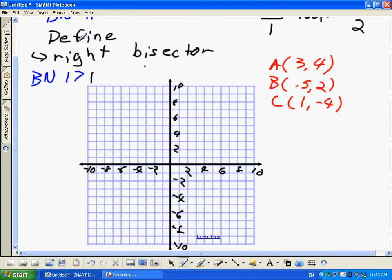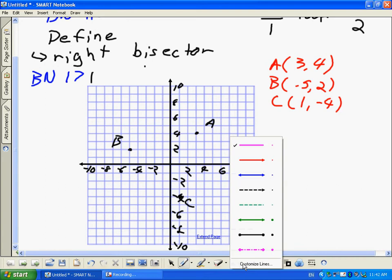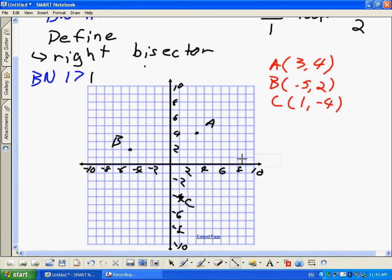Okay. So we're going to plot our point A. Point A is at 3 and 4. So we have our A. Point B is negative 5 and 2. And finally, point C is at 1 and negative 4. There's our point C. So we create our triangle. Let's do it in red.